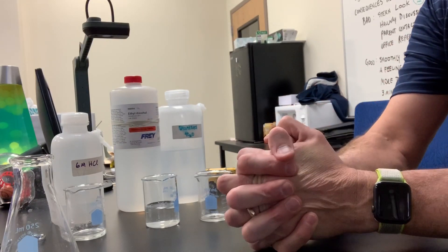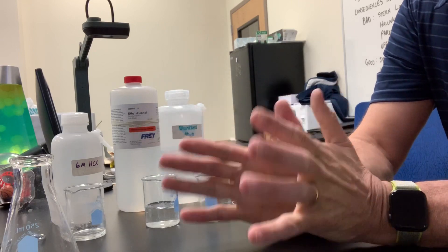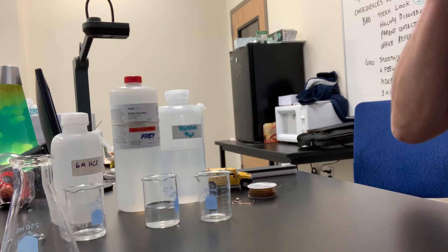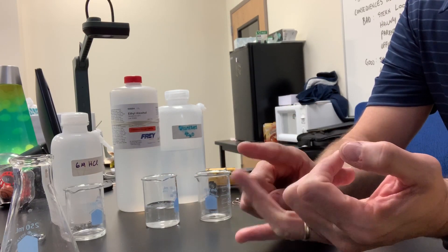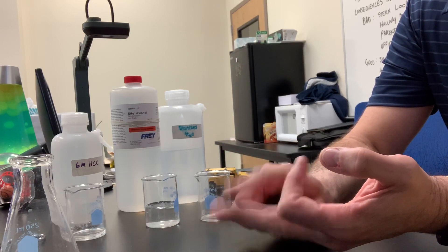All right, kiddos, we're back, and this time we're going to look at some properties of ethanol. Remember, a property is a characteristic that describes matter, and we listed seven different properties for copper and seven properties for magnesium, if you recall. So now we're going to do ethanol.